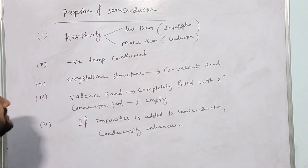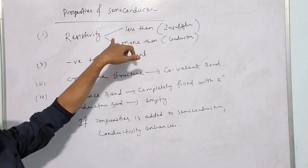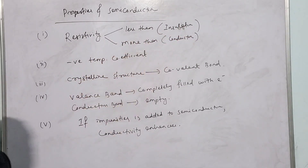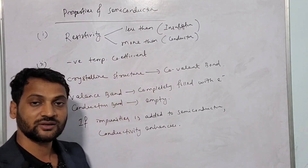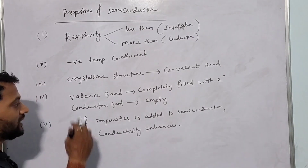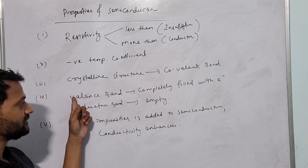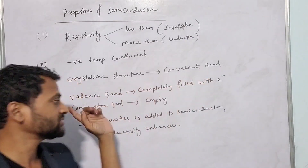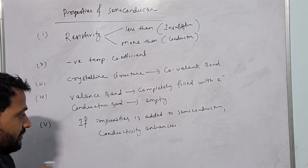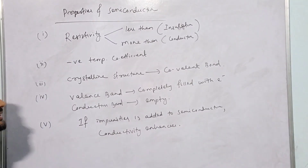So these are the five properties you should remember. First, resistivity — less than that of insulator, more than that of conductor. Second, it has a negative temperature coefficient. Third, the structure is crystalline with covalent bonds. Fourth, the valence band is completely filled with electrons but the conduction band is nearly empty. Fifth, if we keep adding impurities to a semiconductor, the conductivity increases.